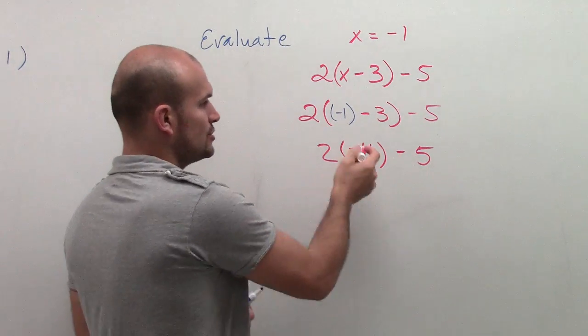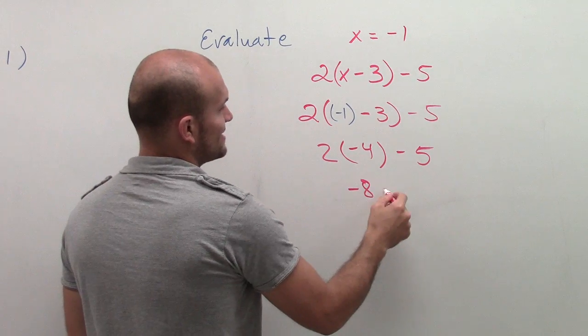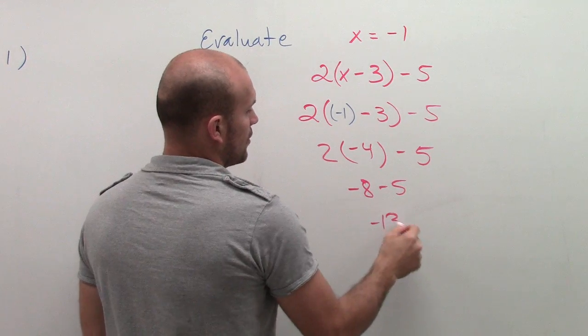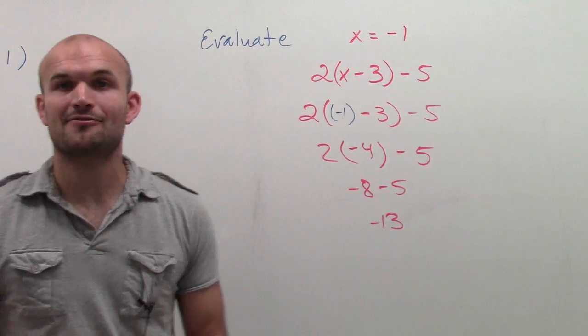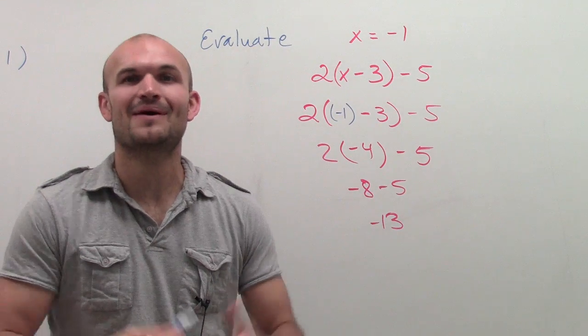Now, again, by following the order of operations, 2 times negative 4 is negative 8 minus 5, which ends up equaling negative 13. And there you go. Voila.